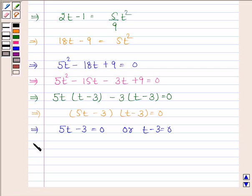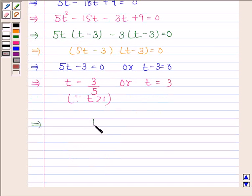So this implies t is equal to 3 by 5 or t is equal to 3. Now t cannot be equal to 3 by 5 because t is greater than 1. So this implies t is equal to 3 by 5 is not possible.